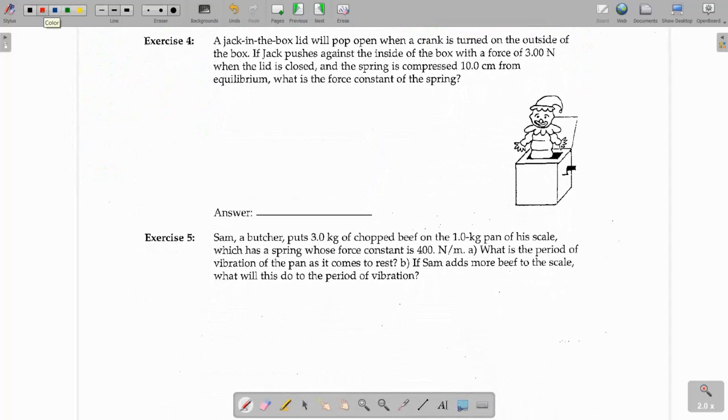A jack-in-the-box lid will pop open when a crank is turned on the outside of a box. If jack pushes against the inside of the box with a force of 3 newtons, when the lid is closed, and the spring is compressed 10 centimeters, so that would be x, our compression, or stretch, that's 10 centimeters, which is equal to 0.1 meters. Again, just divide that by 100. Move the decimal 2 to the left. And then it says, what is the force or spring constant of the spring? So, we are solving for K here.